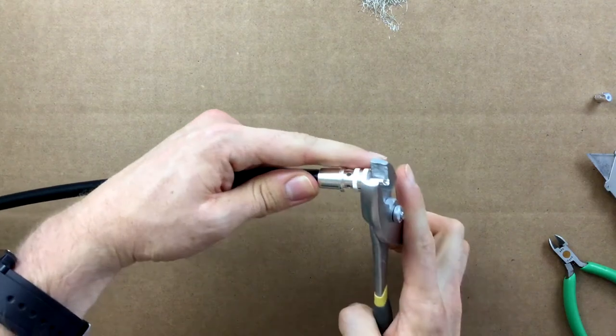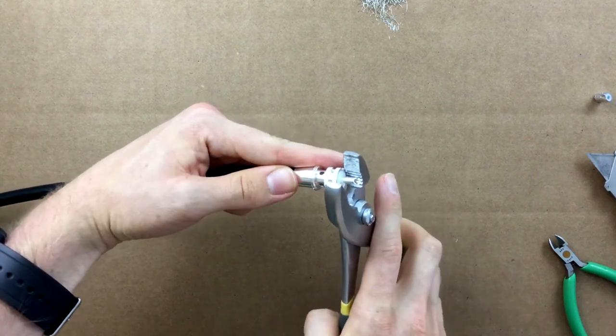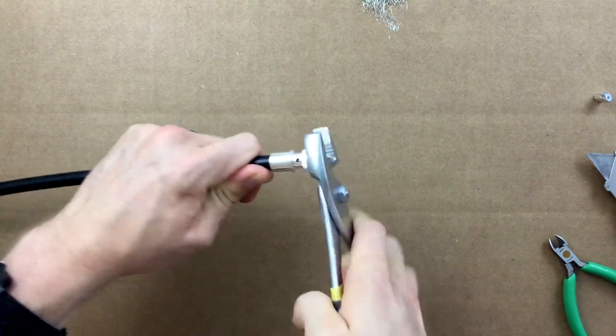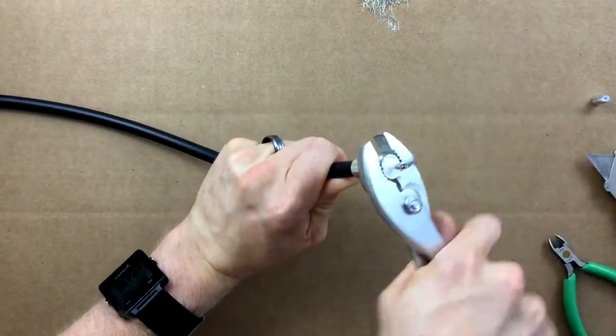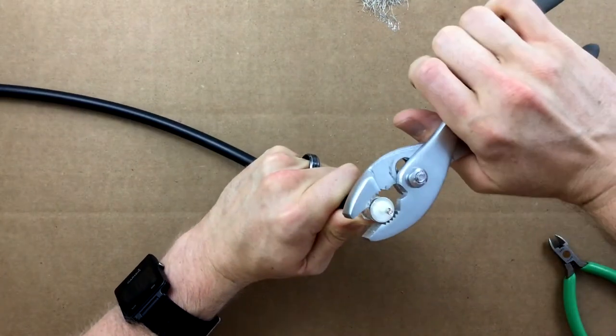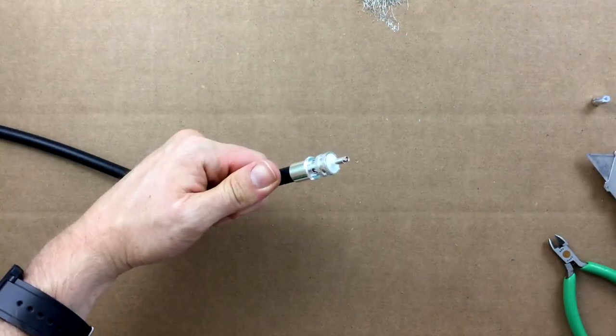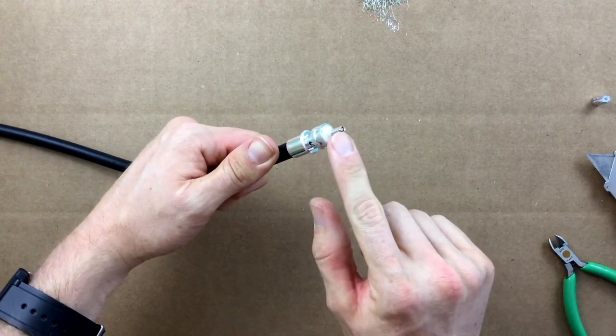You may need a pair of pliers, as I did here, to get the center conductor through the end of the center pin of the PL259. You should see the center conductor of the cable perfectly aligned with the end of the PL259's center pin. If there is any extra, just trim it off with your cutters.